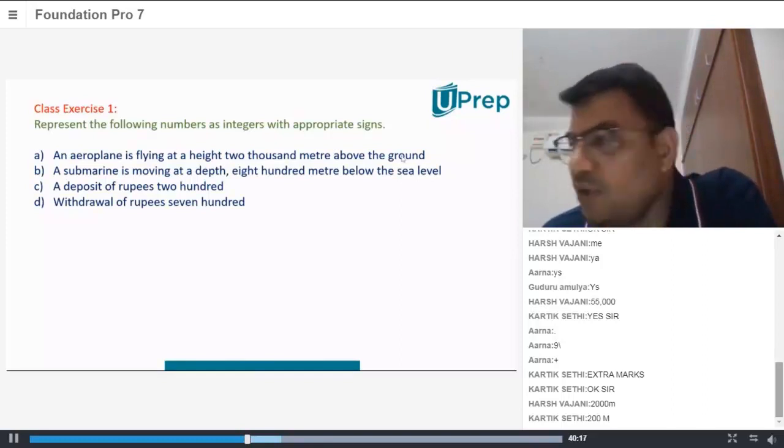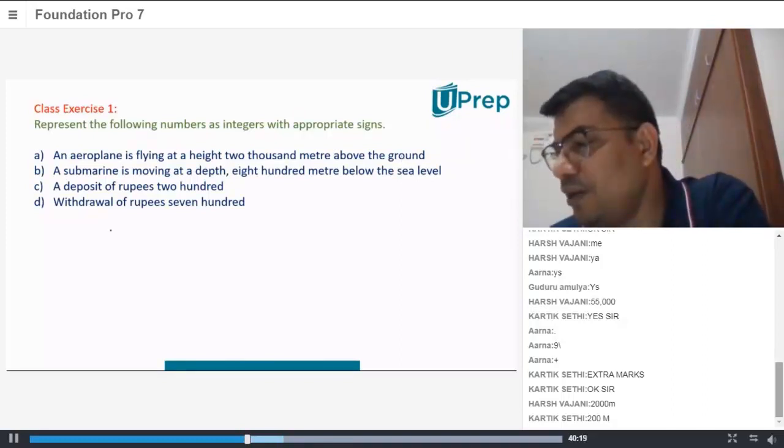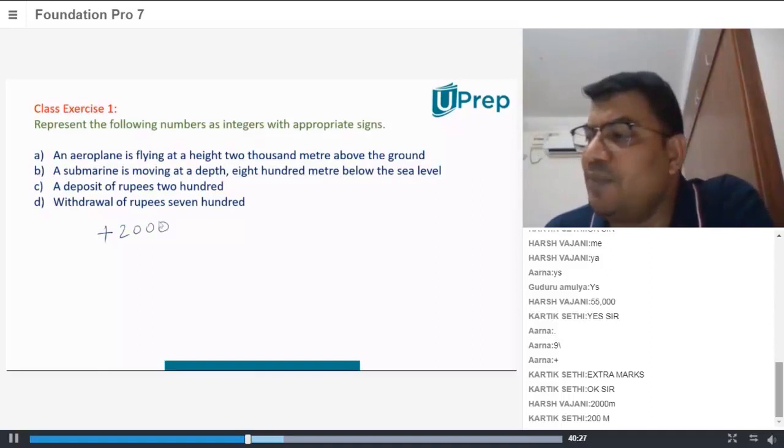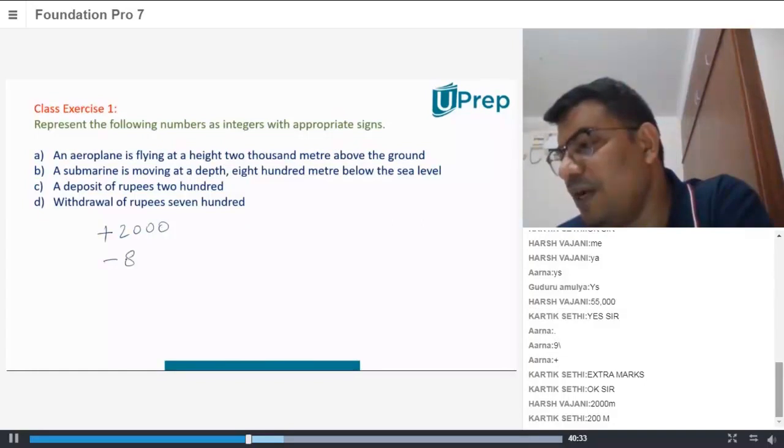Plus 2,000, very good. Second one: a submarine is moving at a depth 800 meters. Minus 800.